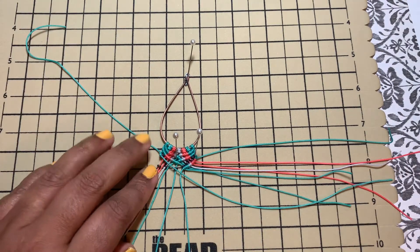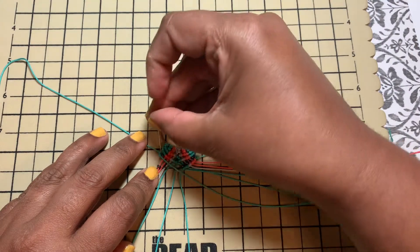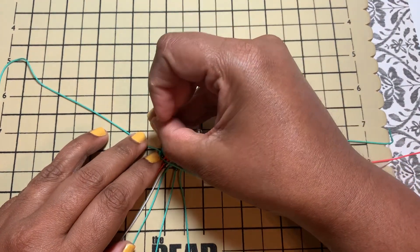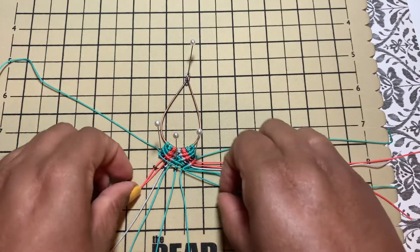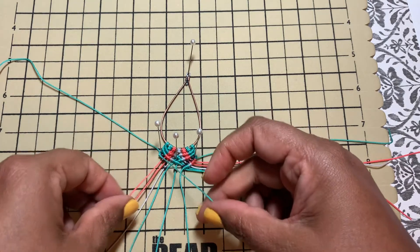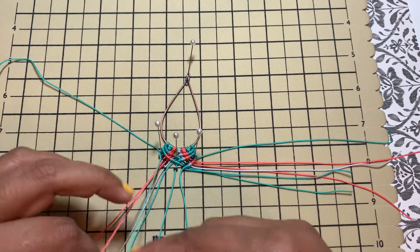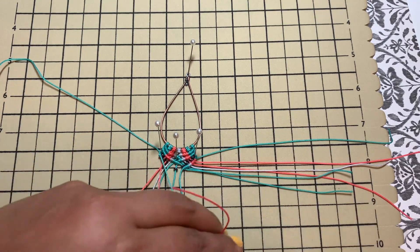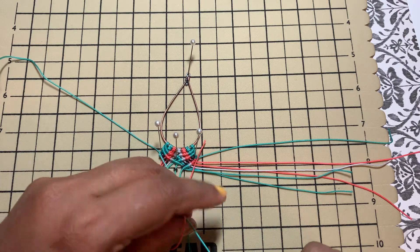Once you do that, take a pin and pin it over there so your cord doesn't move anywhere. The next one is the orange cord. You push the bead all the way over and then have the holding cord.